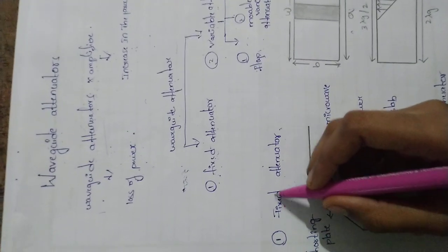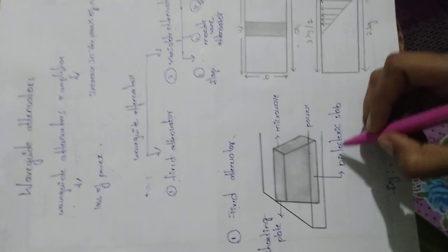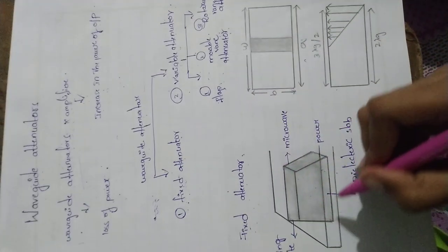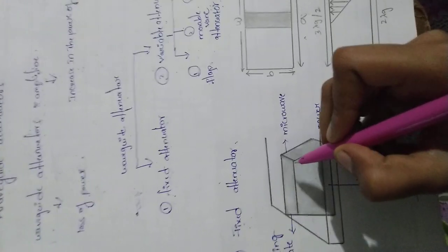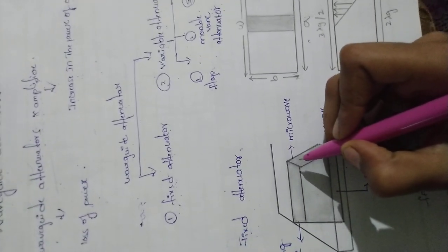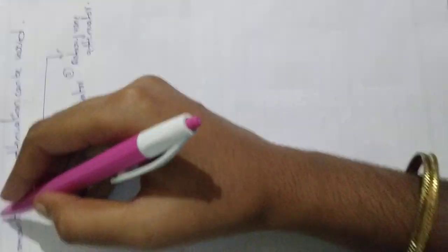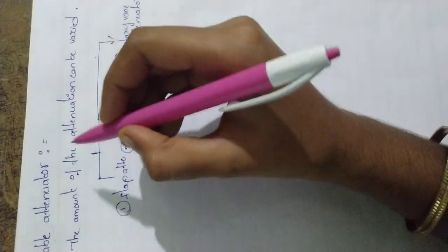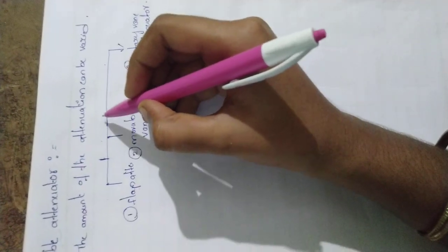Let's see what is the Fixed Attenuator. This is the diagrammatical representation of Fixed Attenuator. Fixed Attenuator consists of a fixed value of attenuation. Variable Attenuator - the amount of attenuation can be varied.